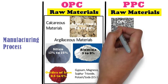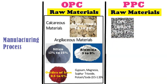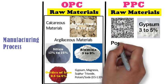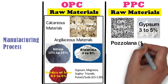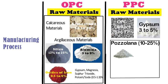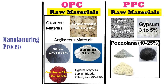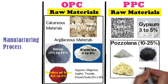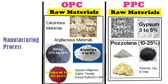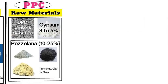The raw materials used to manufacture PPC are OPC cement clinkers 75–77%, gypsum 3–5%, and pozzolanic material 10–25%, which can be fly ash, rice husk ash, volcanic tuffs, pumicites, clay, and shell. All these materials are mixed and ground to obtain Portland Pozzolana Cement.